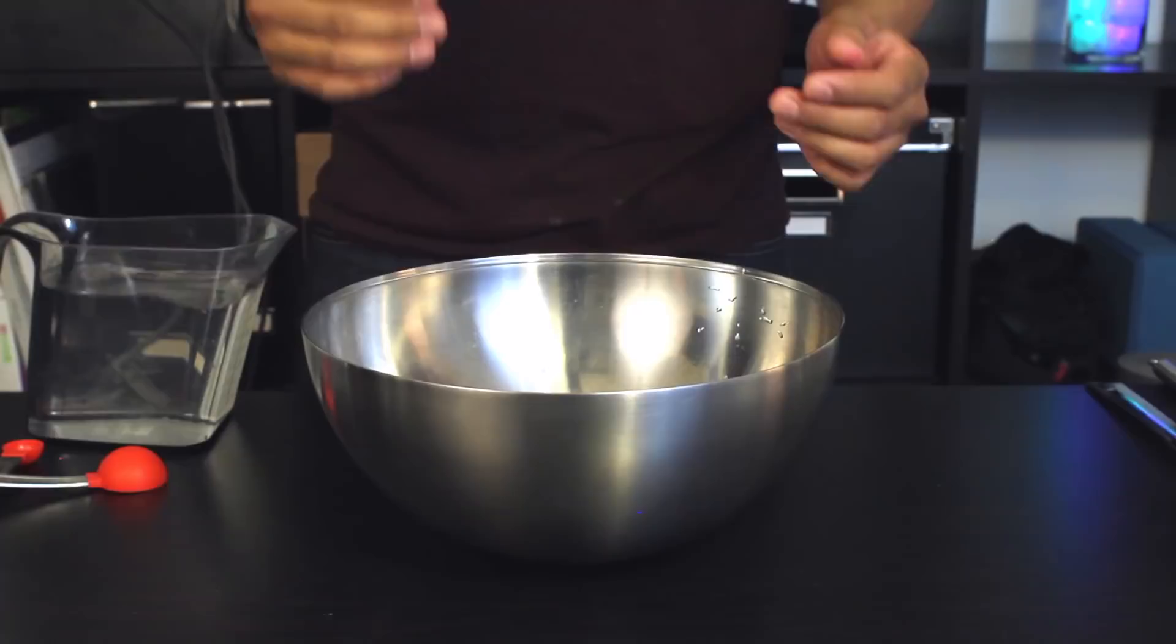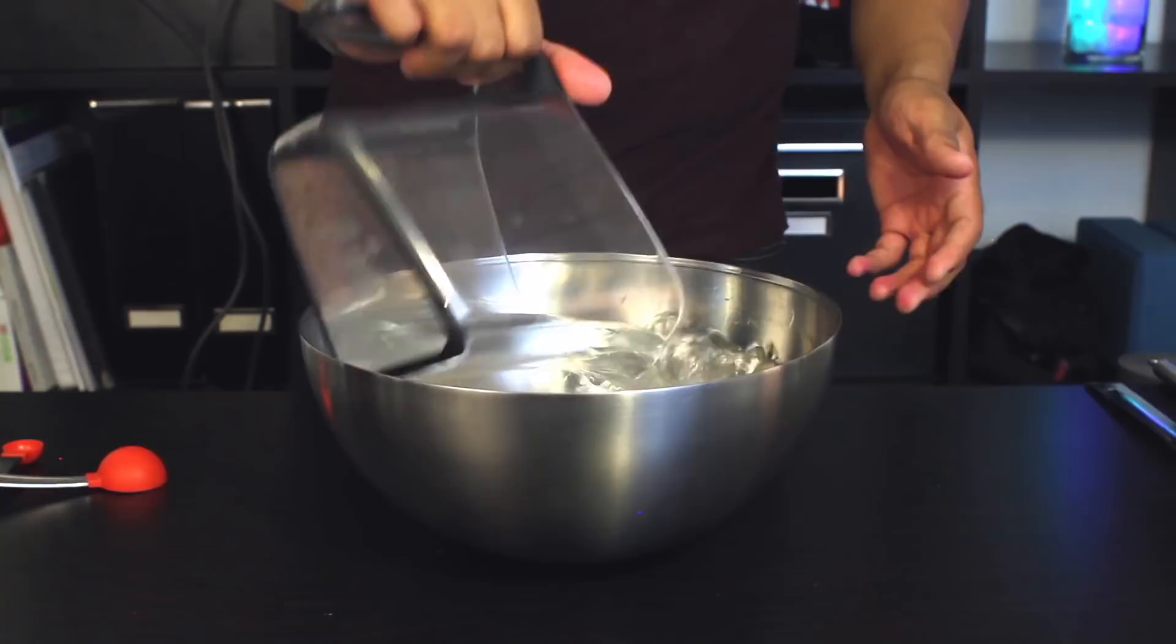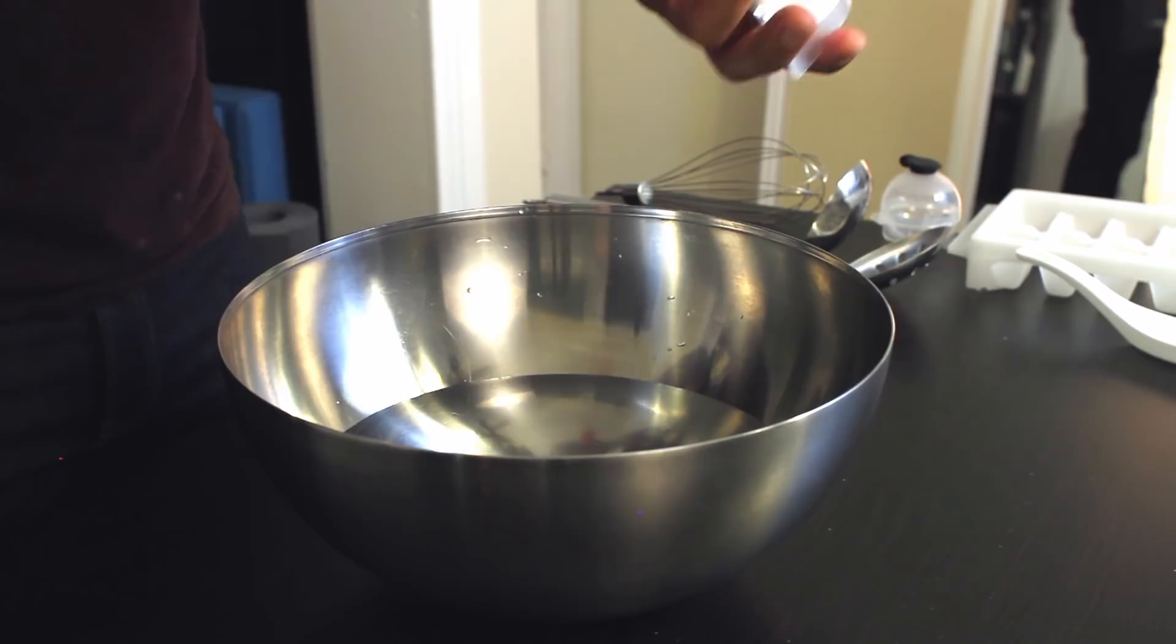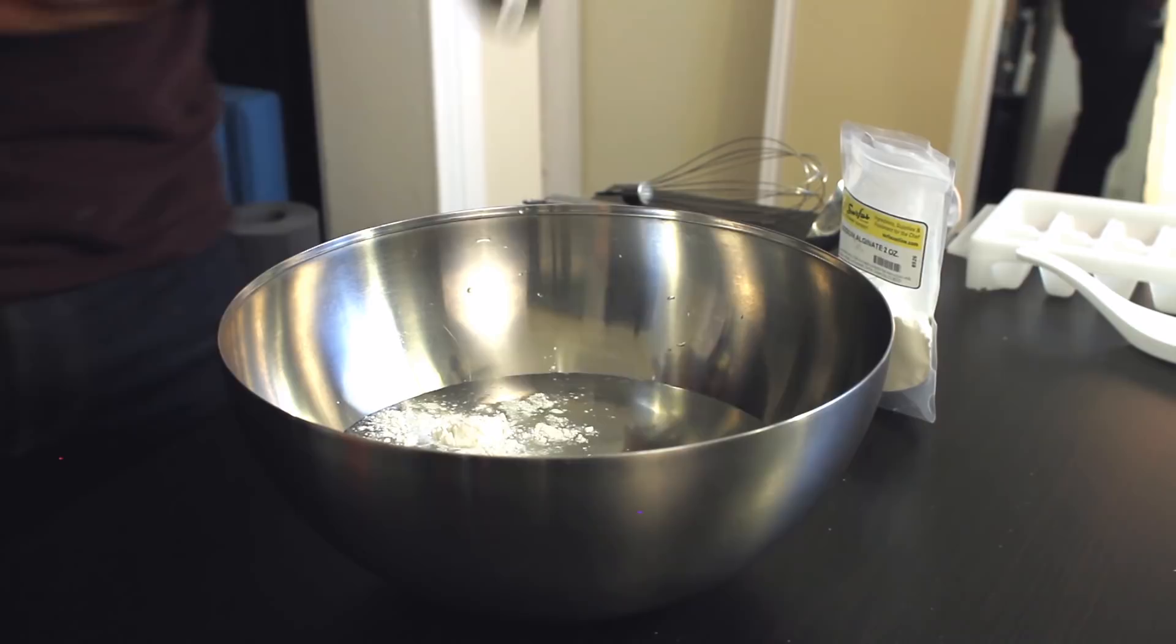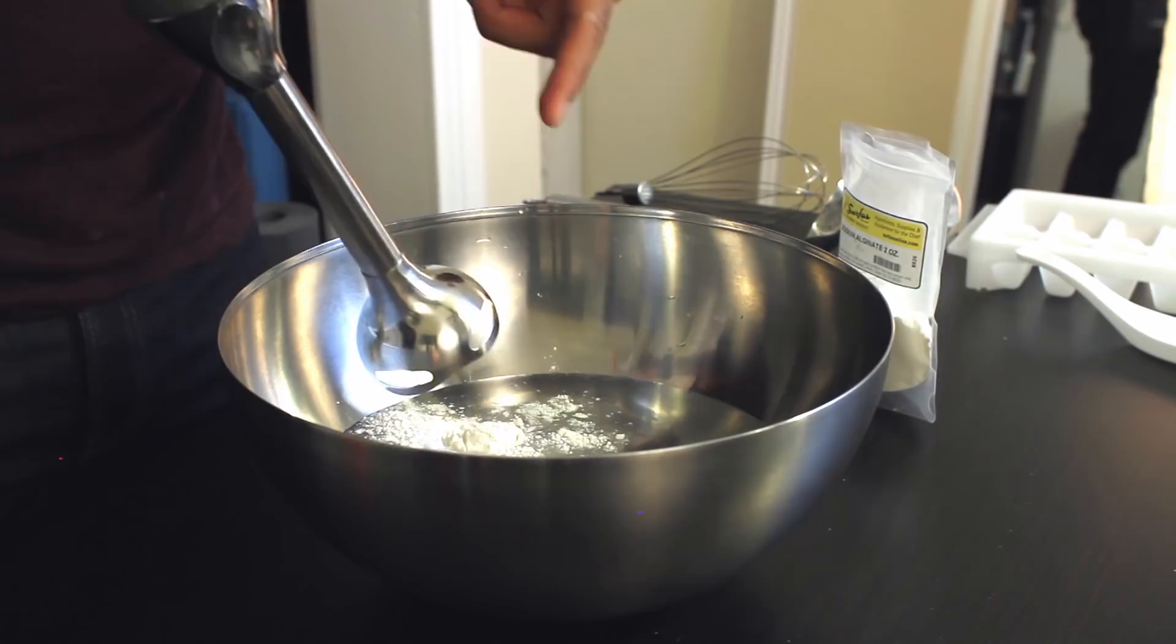First, take your large bowl and add four cups of water. Next, you're going to take one teaspoon of your sodium alginate and mix it into your four cups of water. You want to use your hand blender to mix this really well. Mix this for about two to three minutes until the sodium alginate is completely dissolved into the water.